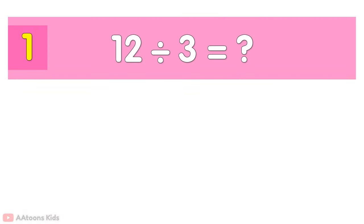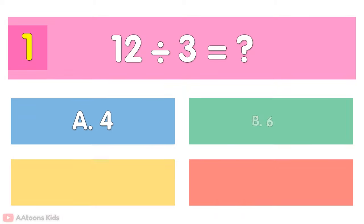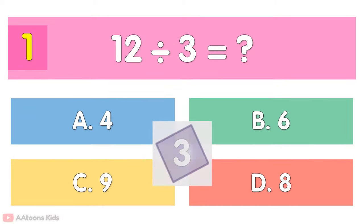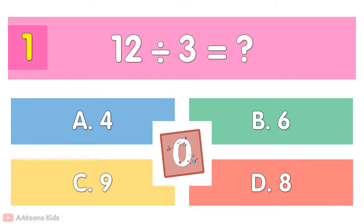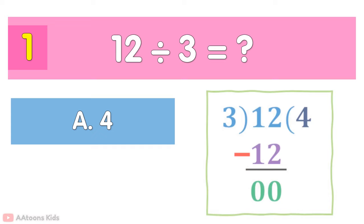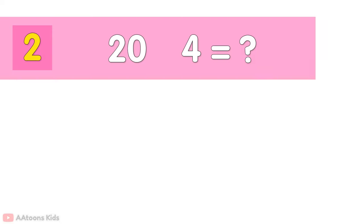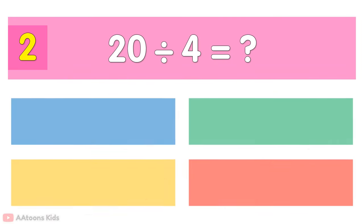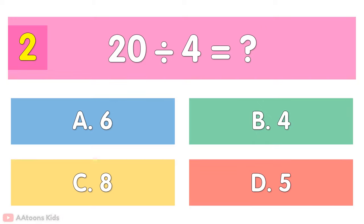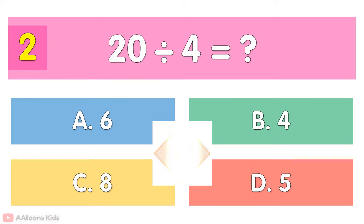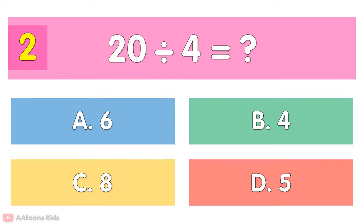12 divided by 3 is... 4. 20 divided by 4 is... 5.